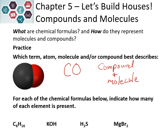For each of the chemical formulas below, indicate how many of each element is present. In our example of carbon monoxide, we had one atom of carbon and one atom of oxygen. If we look at our example of octane, we have eight carbons and 16 hydrogens. We know this because of the subscripts — they tell us how many of each element are present. Pause the video and see if you can determine the amount of each element in the other three examples.